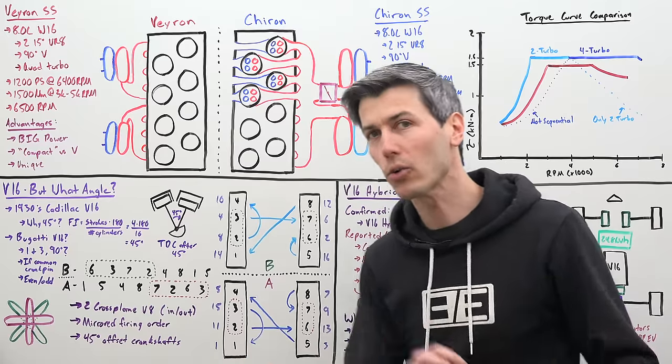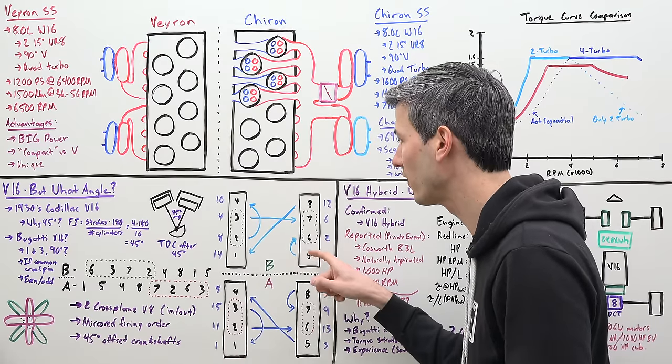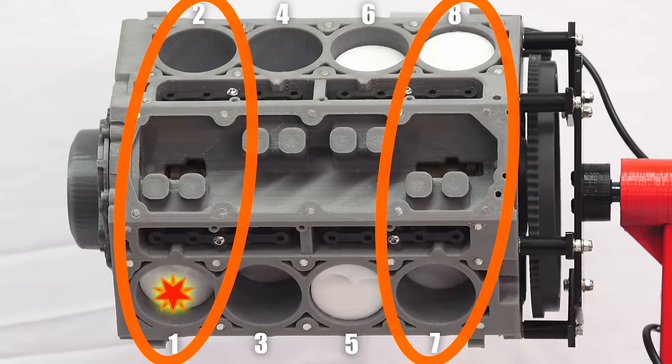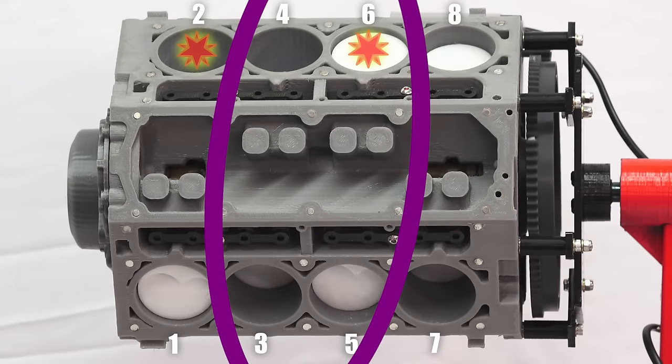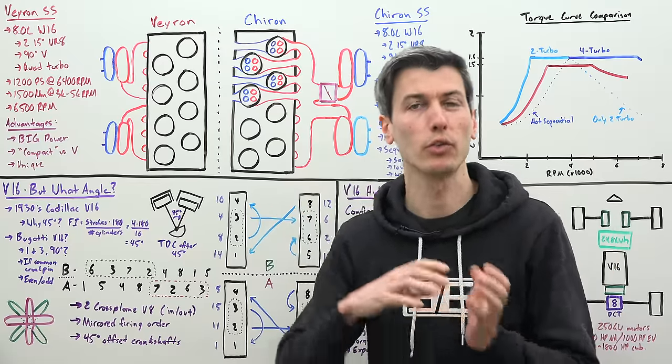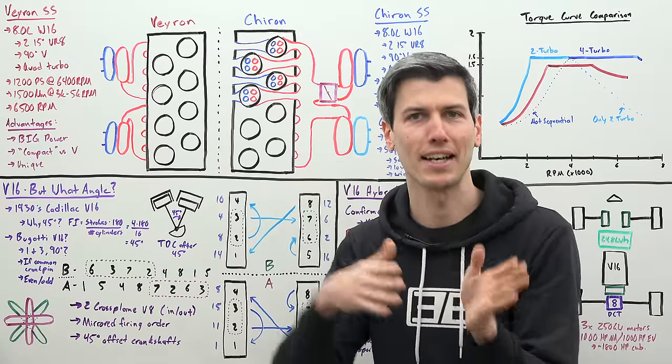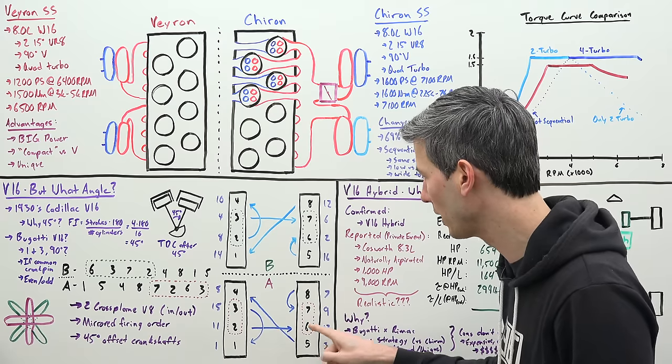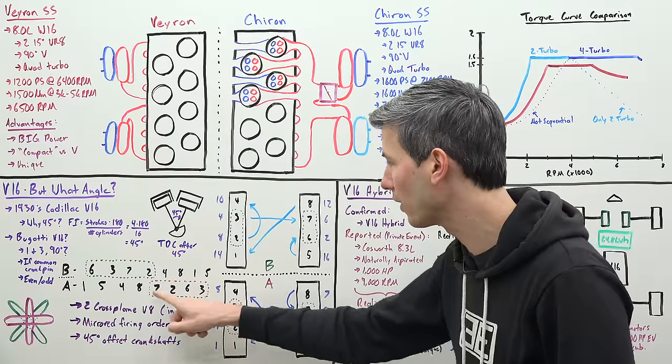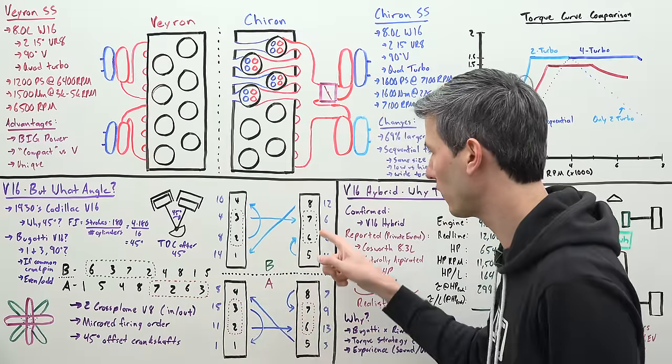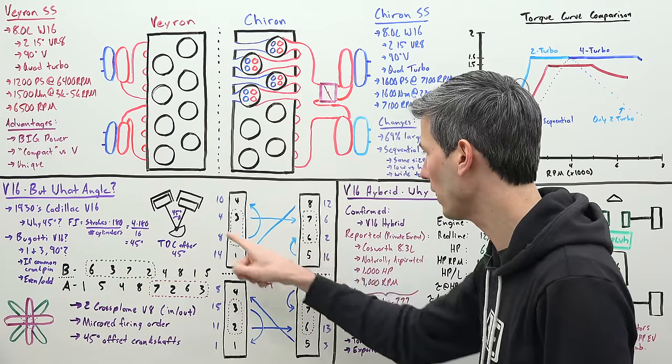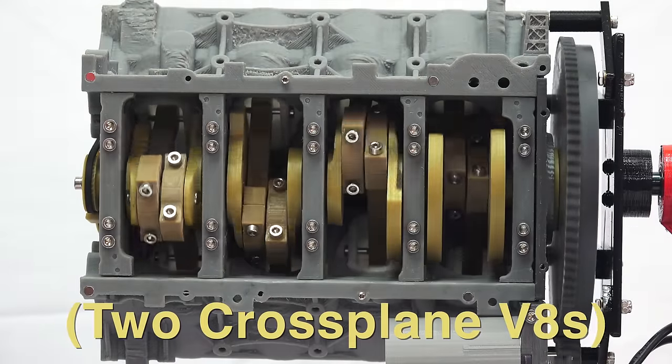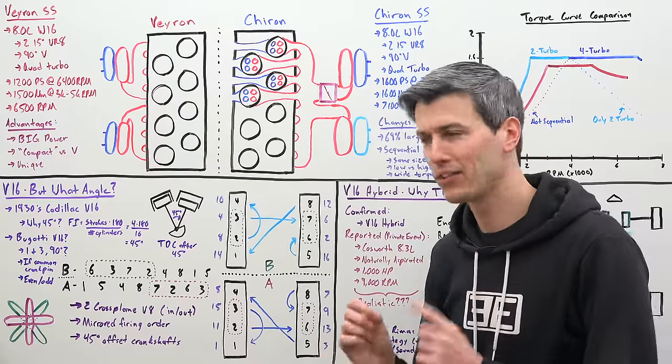With a cross-plane V8 you tend to fire the outside cylinders then the inside cylinders. You've got the outside cylinders firing, then the inner four cylinders firing, then the outer four, then the inner four. On a flat plane crankshaft you see it alternate between two cylinders on the outside, two cylinders on the inside. Here you can look at these firing orders and see that two and three and six and seven are all grouped here together, meaning it's going inside, outside, inside, outside.